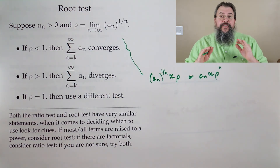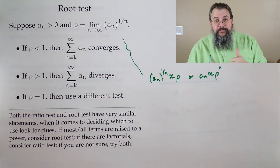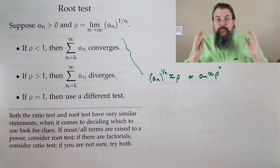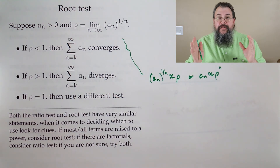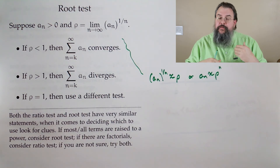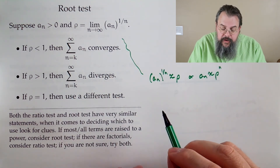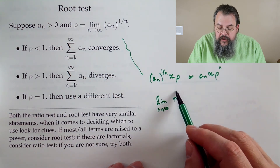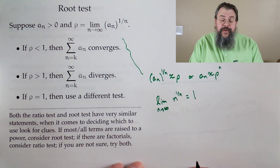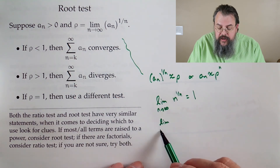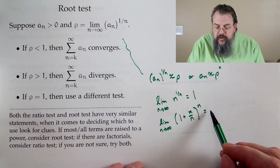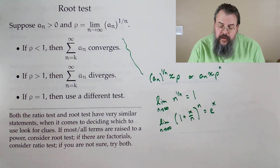Between root and ratio, the general rule of thumb is: if you see a factorial, you're going to think ratio test. Otherwise, both tend to work, but root tends to be a little bit easier. If you see n up in the exponent, root makes a wonderful approach. One helpful limit to remember when doing the root test: the limit as n goes to infinity of n^(1/n) equals 1. Another thing to keep in mind: the limit as n goes to infinity of (1 + x/n)^n equals e^x.